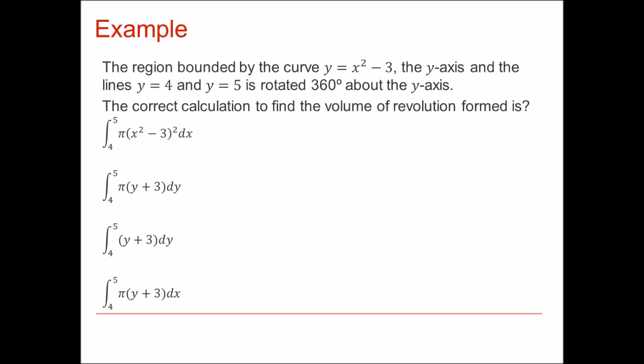So just consider the following then. If we had the region bounded by the curve y equals x² minus 3, and the lines y equal to 4 and 5, which of these would be the correct calculation that you'd need to do? So pause the video a little while just to work through this and see what you come up with, and perhaps you might consider why each of the other ones is incorrect.